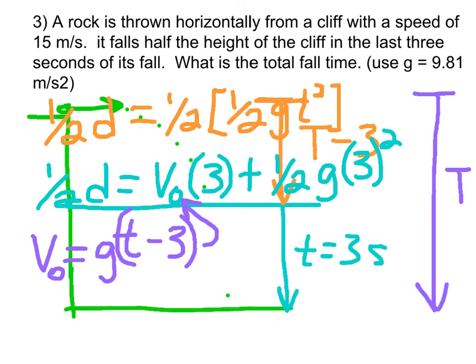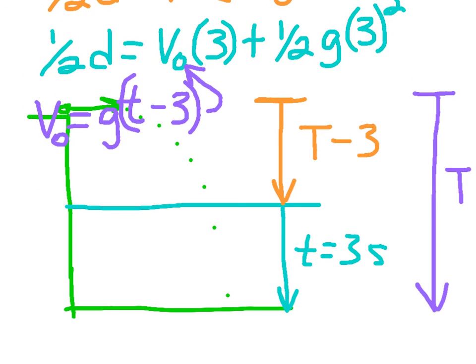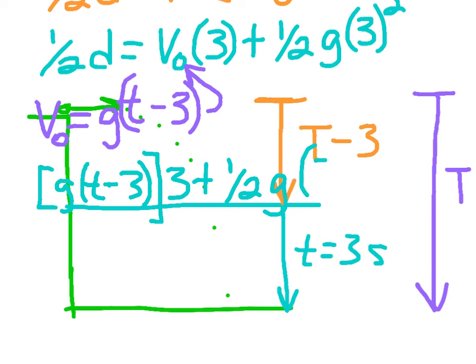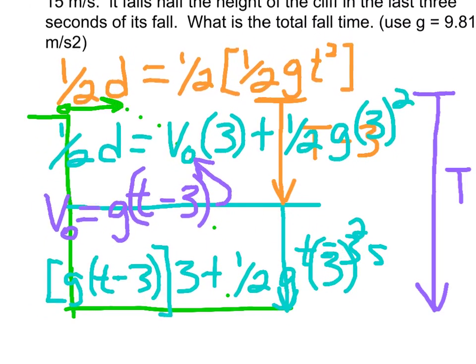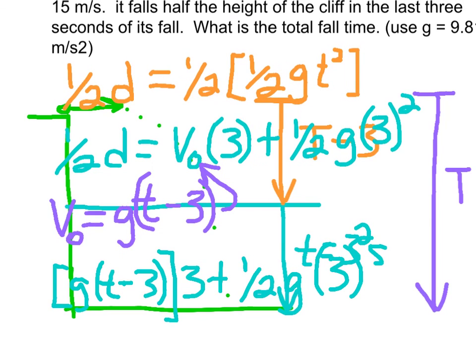So my next problem is to go ahead and plug that in. I'm going to rewrite my aqua equation, and that's going to say that G times T minus three, times three, plus one-half G times three squared. And that's equal to my orange equation. And I'm going to rewrite my orange equation when I simplify this, because this times this is four, and so I'll say one-fourth G T squared.